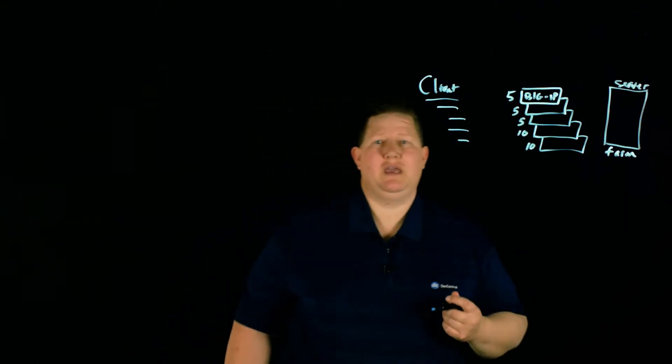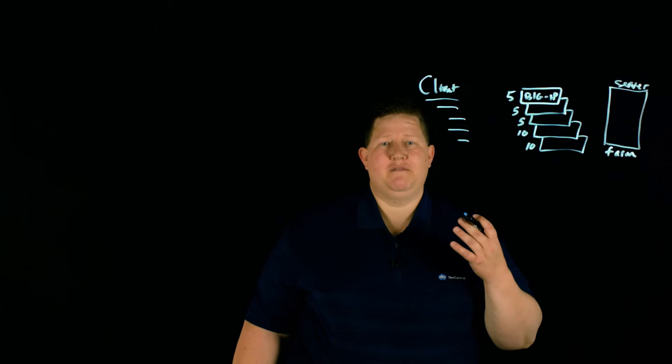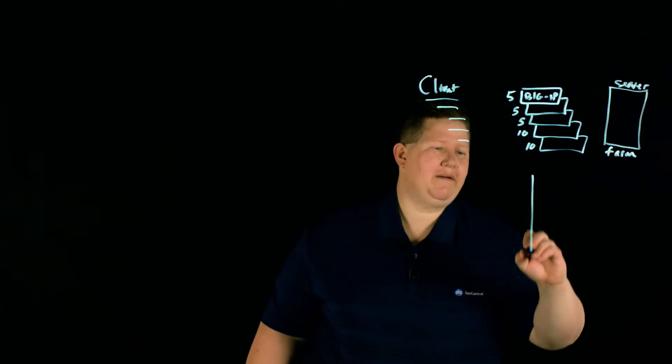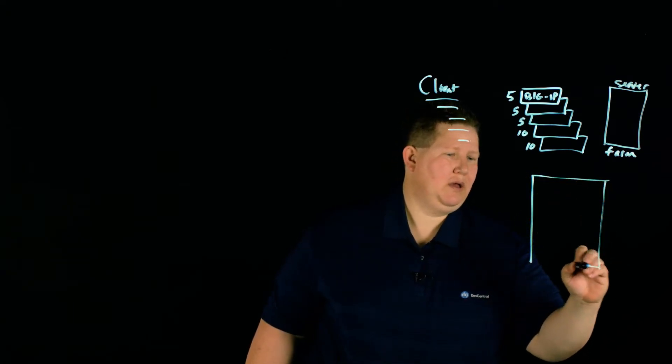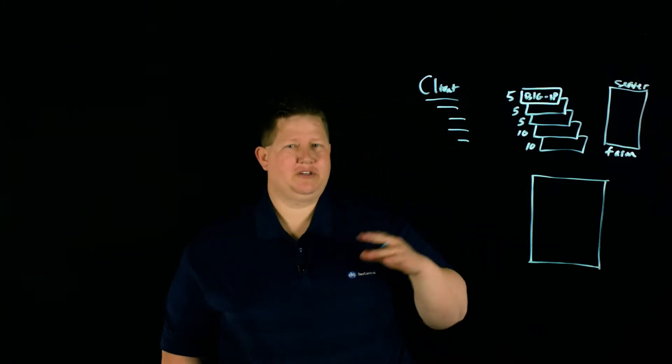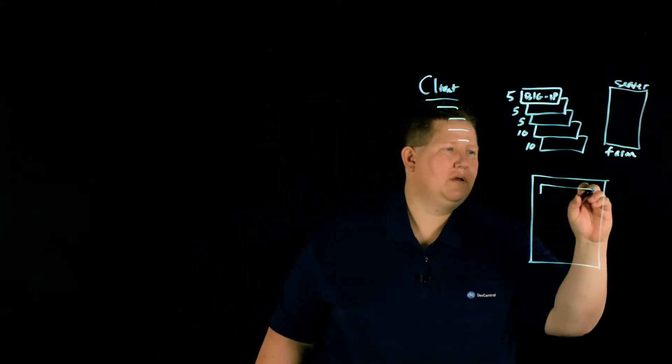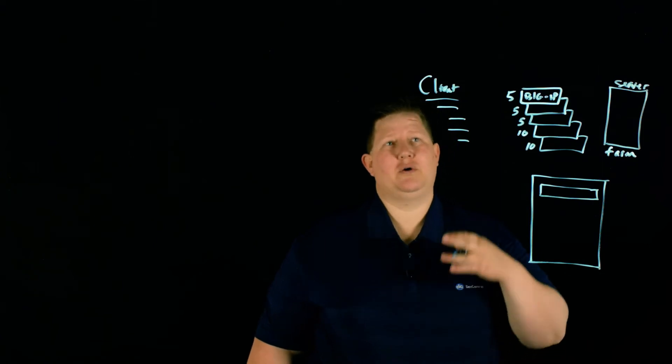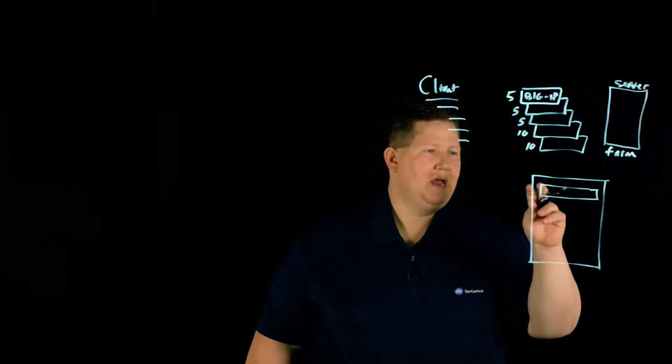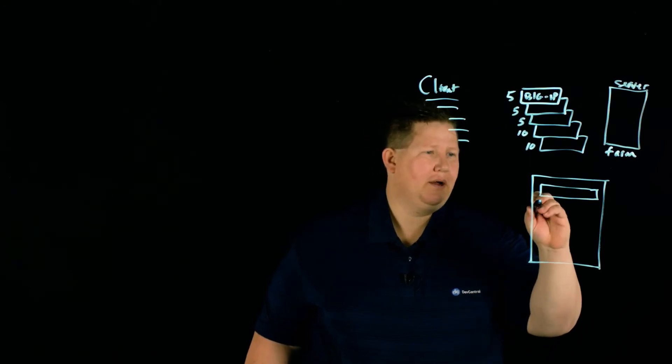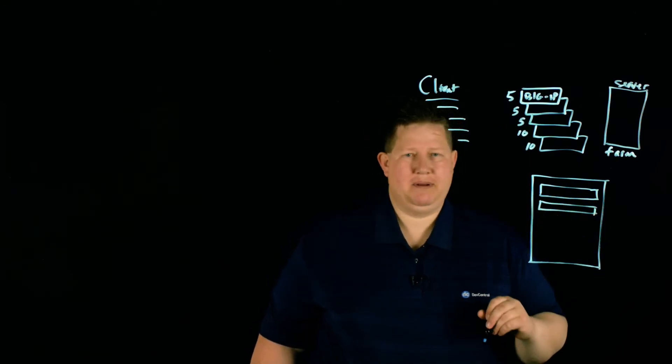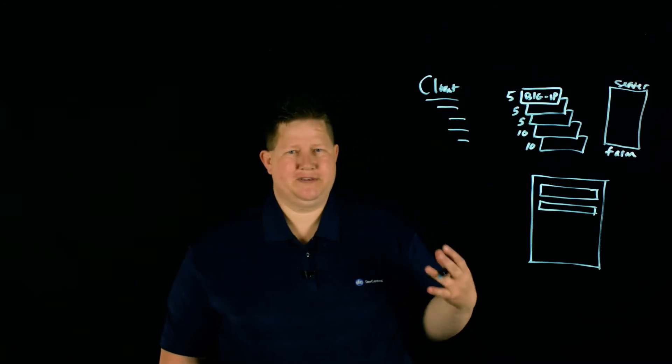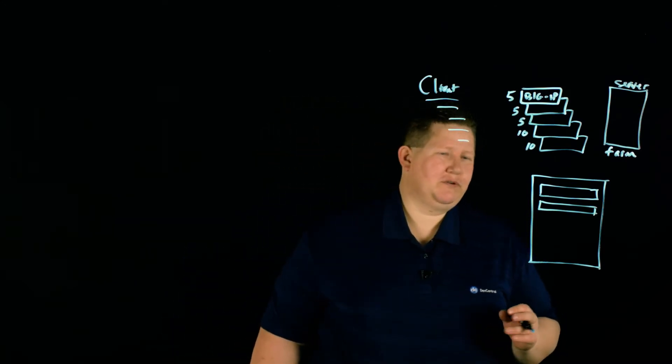That's where one of the options that you have with a Viprion comes into play: the concept of a super VIP. If you have a Viprion chassis, there are different chassis options there, you've got your small chassis and your big chassis, but it's all blade-based. You can start with a monster chassis and a single blade, and then as your traffic needs grow, you can add another blade, pop it in, and you have just doubled your capacity. You don't need to change configuration at all. That concept of a super VIP is very appealing to customers that want to grow as they go.